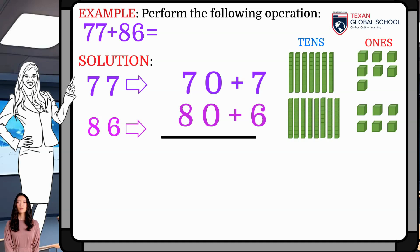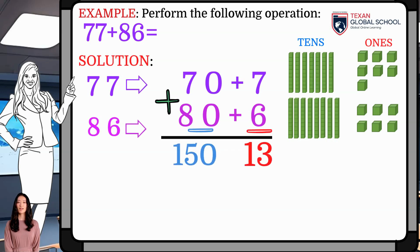Then, draw a line below to perform the addition. Now, add each column. Add 1s and 10s. 7 plus 6 is 13, and 70 plus 80 is 150.